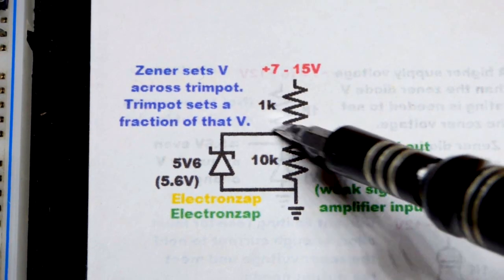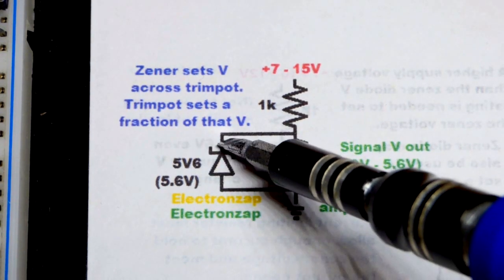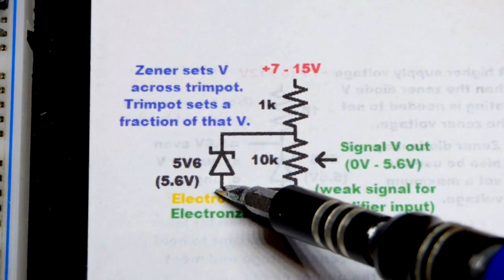So in this case, 7 volts will be high enough and it will pass current as needed to hold 5.6 volts across the cathode there and the anode.